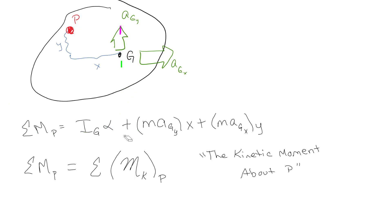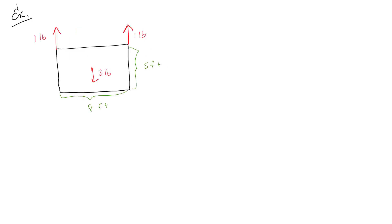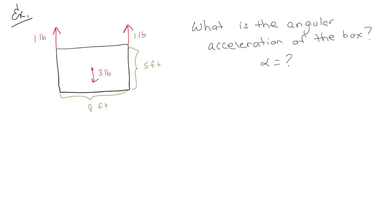This approach works in the X-Y coordinate system and also in curvilinear normal-tangential coordinates. Let's go through a simple example. We have a block weighing 3 pounds with two cables, each with 1 pound of tension pointing up. Since there's only 2 pounds up and 3 pounds down, the box is clearly falling. Hopefully it's clear that alpha is going to be zero — there's no rotation — but we're going to prove it.